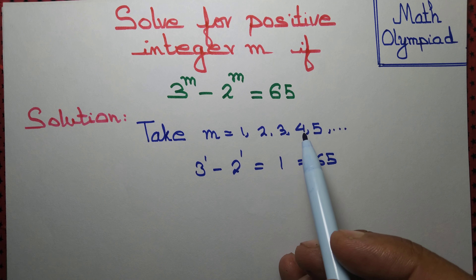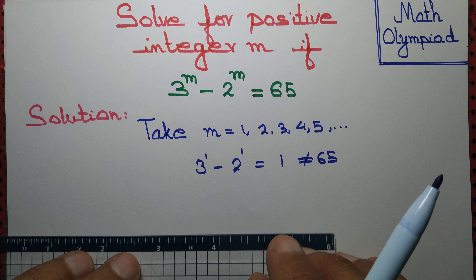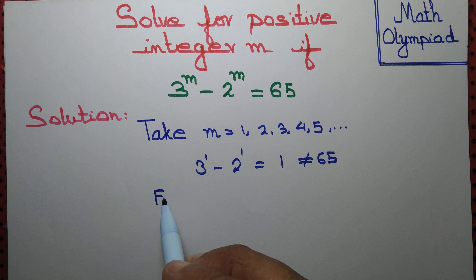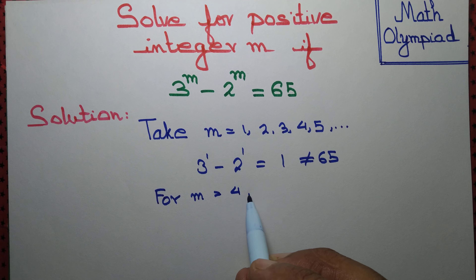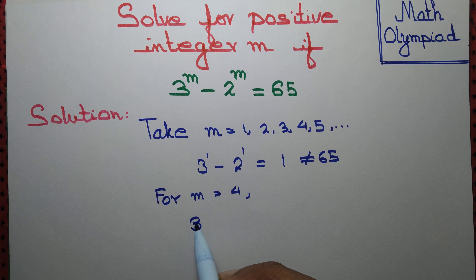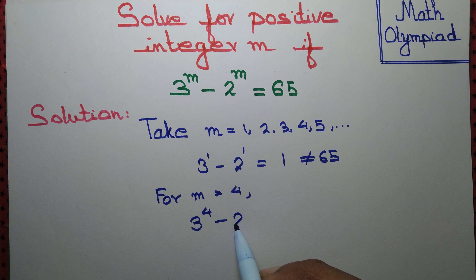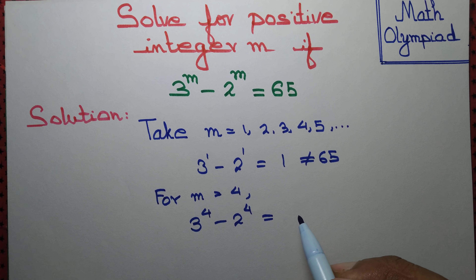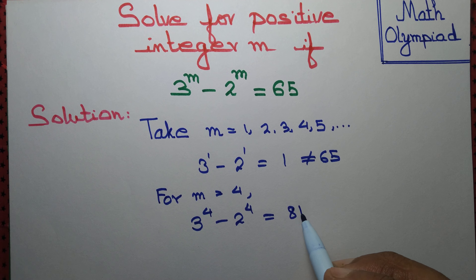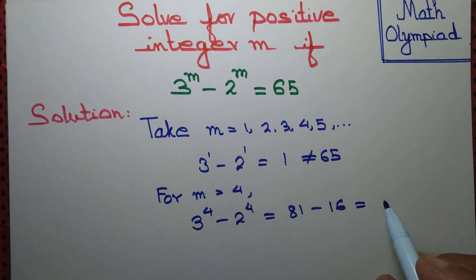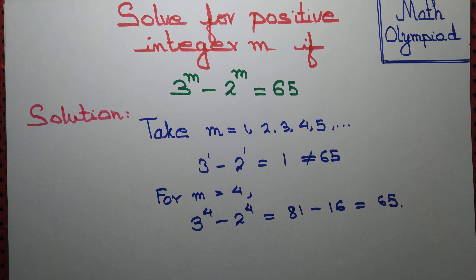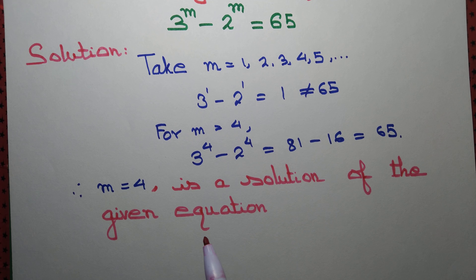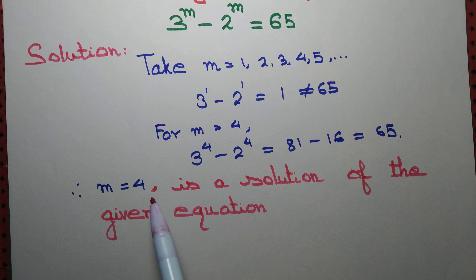What about m equal to 4? For m equal to 4, we have 3 to the power 4 minus 2 to the power 4. 3 to the power 4 is 81, 2 to the power 4 is 16, and that's equal to 65. Therefore m equal to 4. So we observe by trial and error method that m equal to 4 is a solution of the given equation.